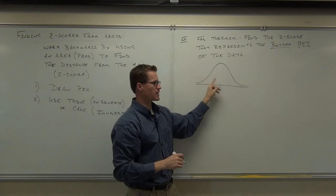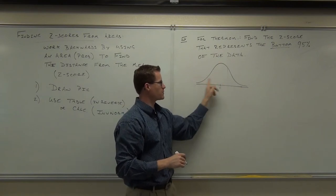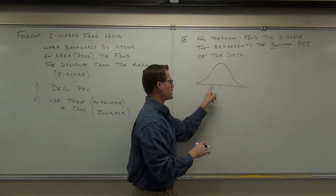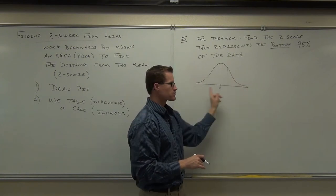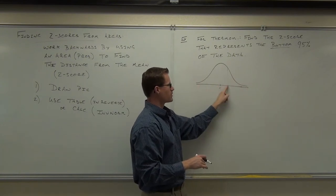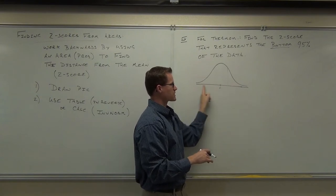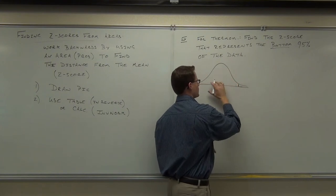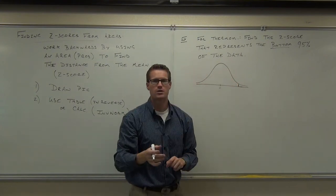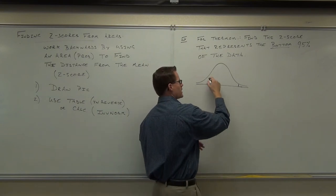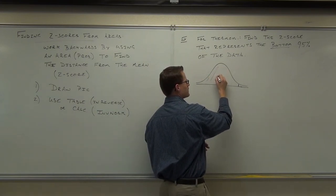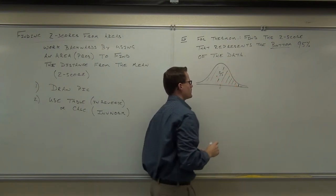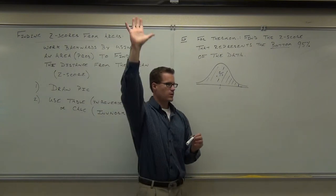This is the bottom 60%. Notice that this would be like the bottom 10%, this is the bottom 50%, this is the bottom 60%. Where's the bottom 95%? This would be the bottom 50%, the bottom 60%, the bottom 70%, the bottom 80%. This is like the bottom 95%. Shade what you were talking about. If I want to find the bottom 95%, it's 95% of the data is below that number.